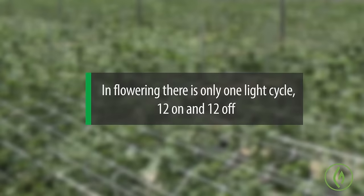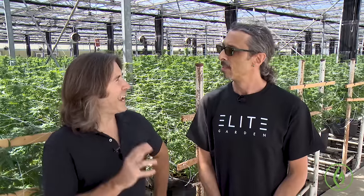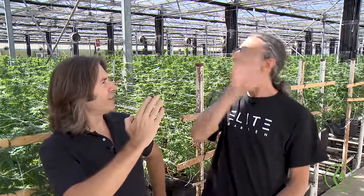You have a few different options that will still keep the plants in that veg state. But in flowering, there's really only one light cycle — it's 12 on, 12 off. In nature, what dictates that light cycle is the sun.